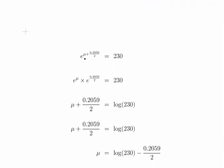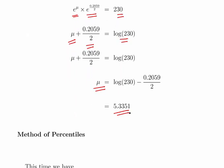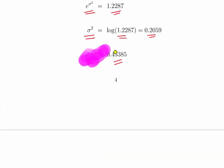From sigma squared we can work out mu. Using the mean expression, the exponential of mu plus sigma squared over two equals 230. Taking the log of both sides gives mu plus 0.2059 divided by 2 equals log of 230. Working that out, mu equals 5.3351. So from the method of moments, mu equals 5.3351 and sigma equals 0.45385.